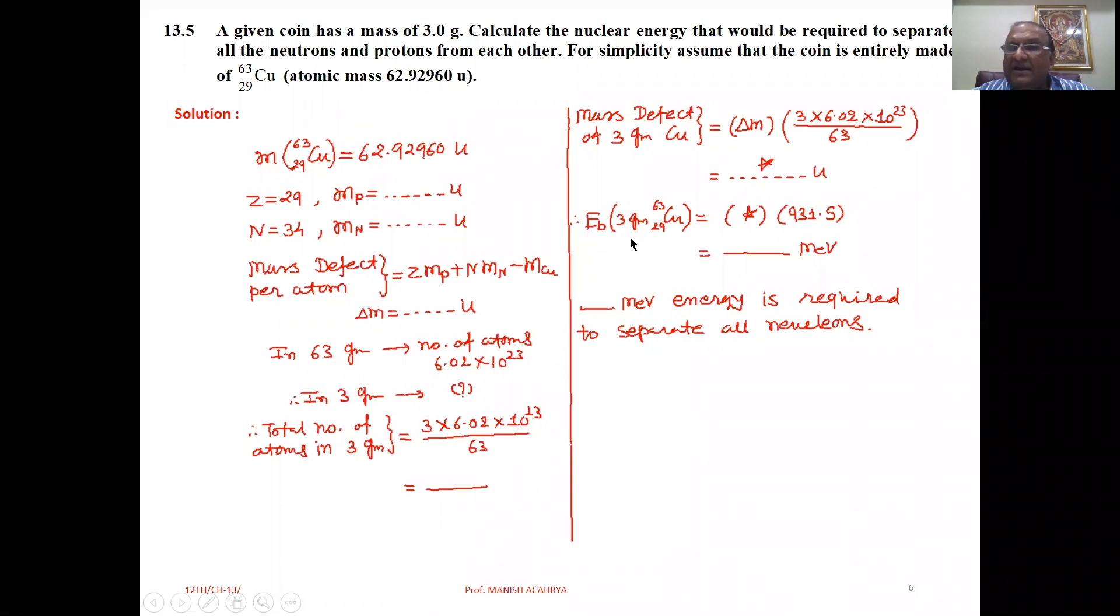Therefore, now binding energy of 3 gram Cu is this mass, which is in terms of U. So directly multiply it by 931.5, you will get binding energy in terms of MeV. So whatever is the binding energy of that particular substance, that much energy we have to supply to separate all the nucleons. Clear to all of you? So energy required equals binding energy.